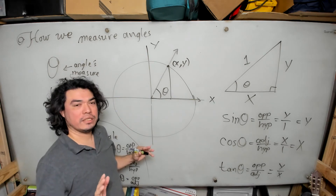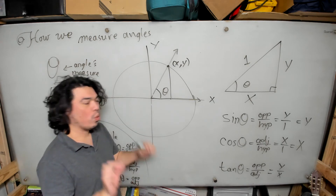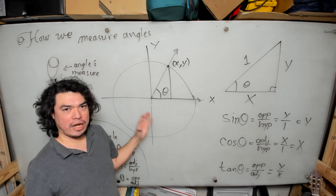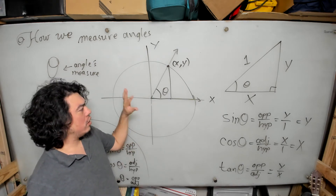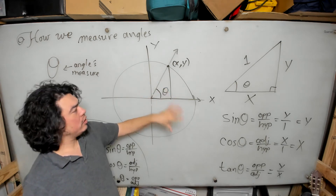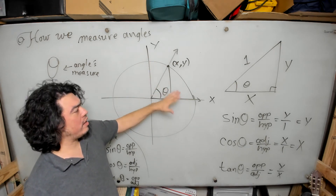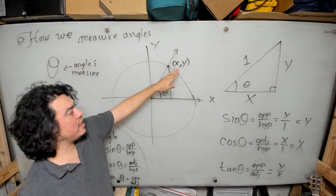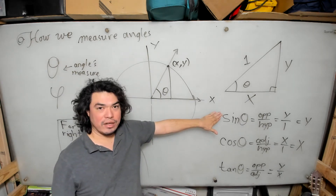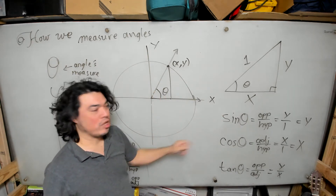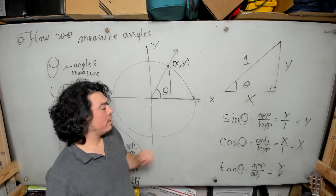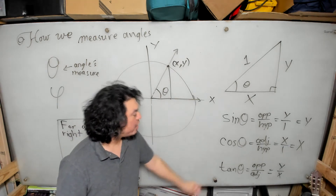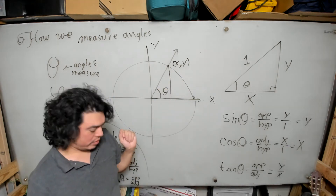What just happened is this: if I place an angle in standard position and the terminal side intersects the unit circle at coordinates x,y, then the sine of that angle will be the y-coordinate of that point, the cosine of theta will be the x-coordinate of that point, and the tangent of theta will be the y-coordinate divided by the x-coordinate.